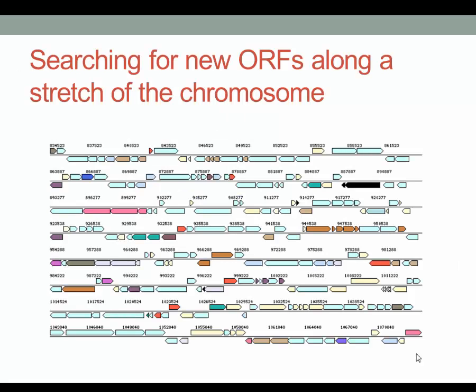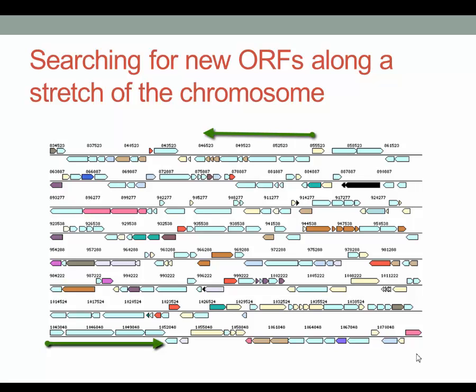There are many approaches one can take in a gene annotation. This figure demonstrates one approach: looking for open reading frames along a stretch of the chromosome. This is an image from the Joint Genome Institute's database called IMG, which predicts the position and functions of genes along a stretch of the chromosome. Each band represents a particular open reading frame, and the direction of the arrow points in the direction of transcription. It is common to find new open reading frames missed in the original annotated gene call, and searching for ORFs using the NCBI's ORF Finder followed by further annotation can result in the discovery of new genes.